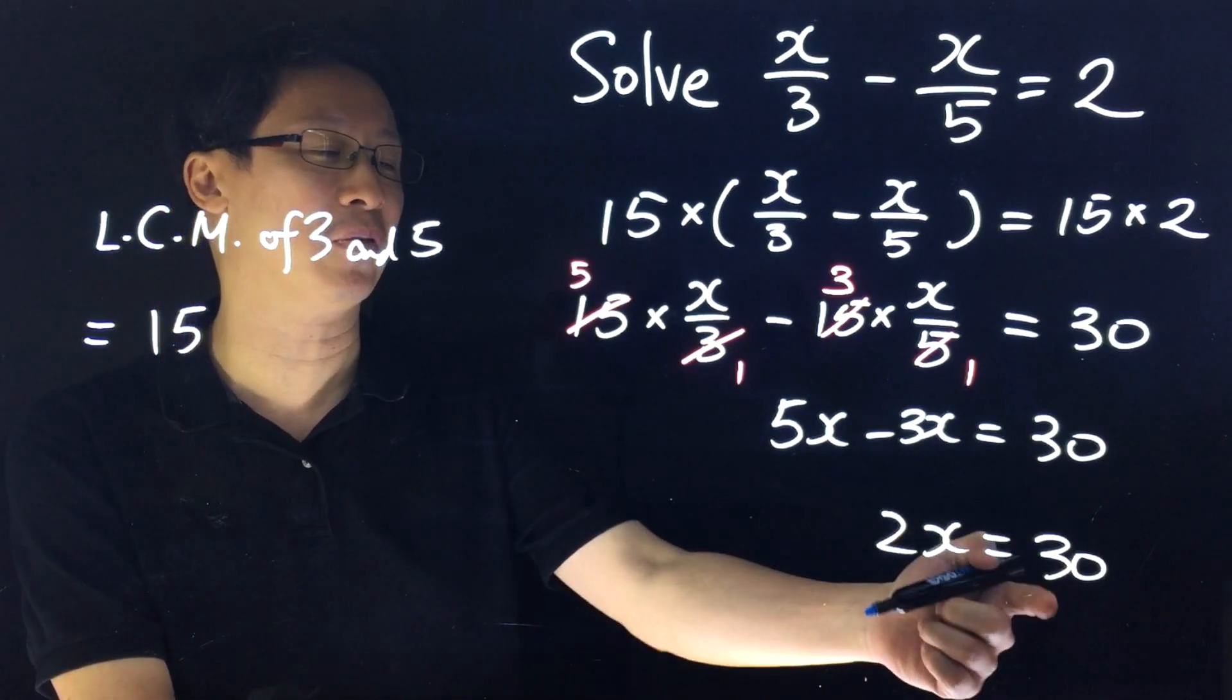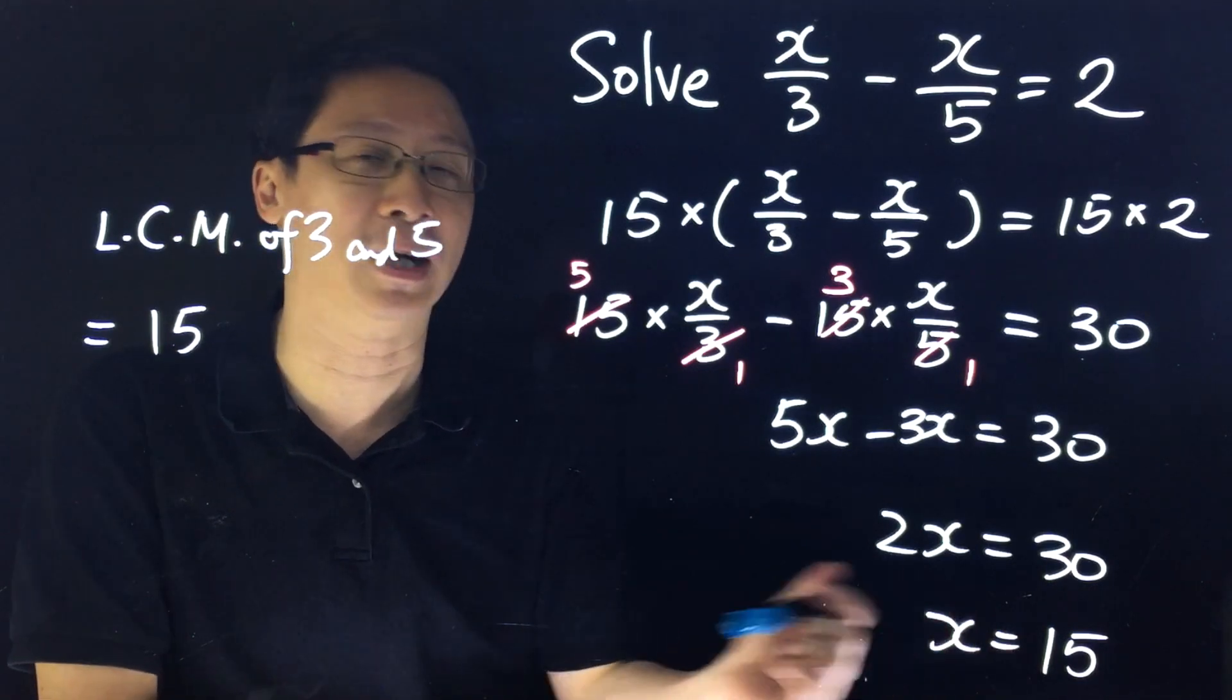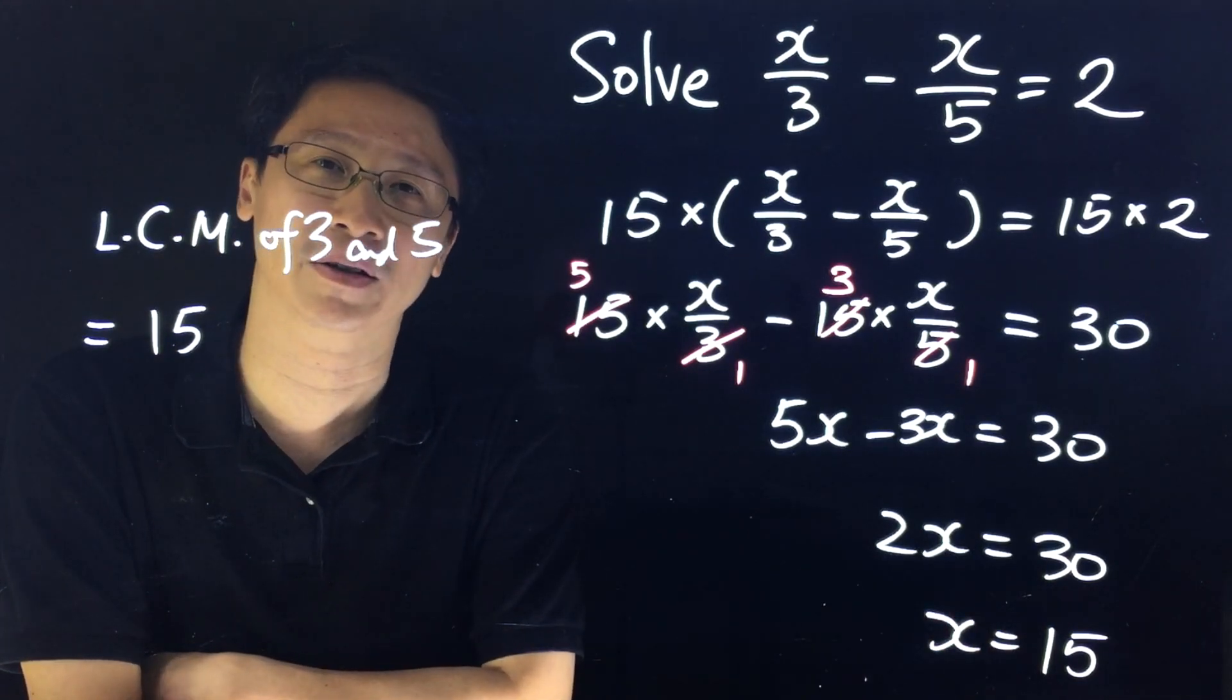At the end, we divide both sides by 2. Therefore, the answer is x = 15.